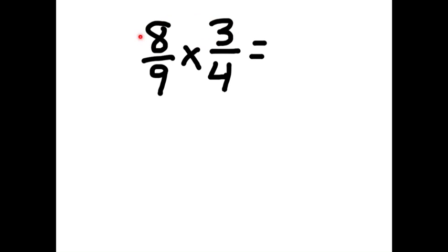So what we do when we multiply fractions is we multiply the numerators. So we got 8 times 3 is 24, and then we multiply denominators. So 9 times 4 is 36.